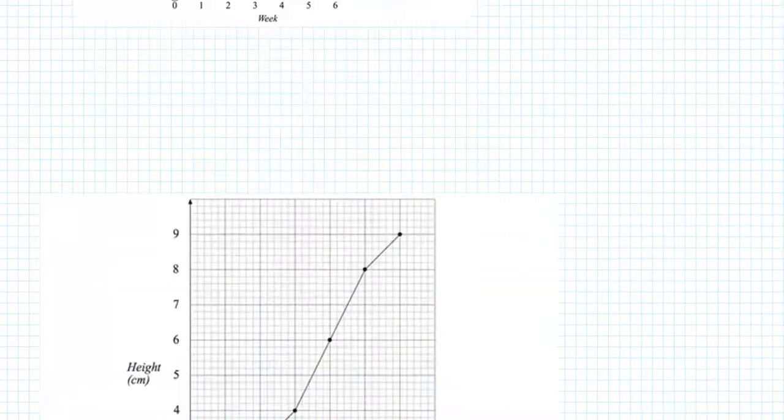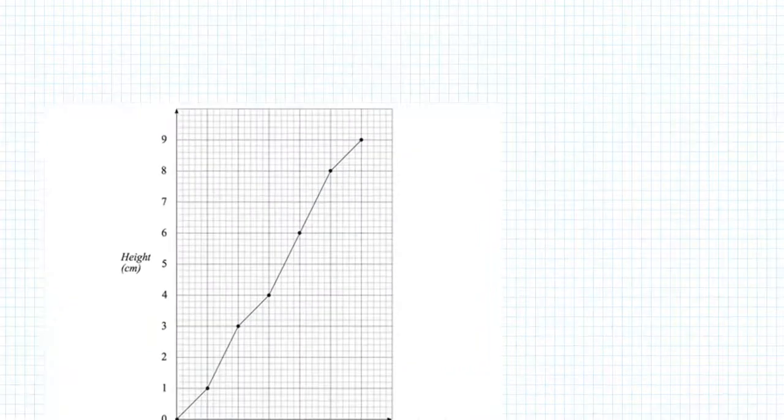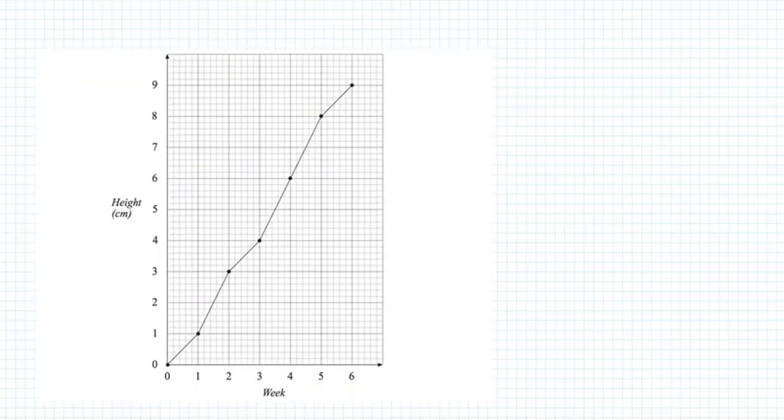Once you've done that you're then going to join them up with a straight line starting from the first one. You use a ruler to join the points and then we are finished. That is how you're going to draw your line graphs.